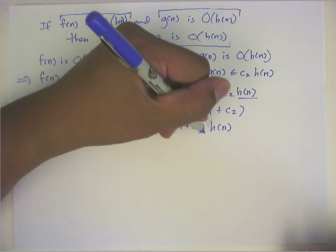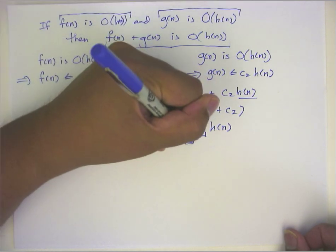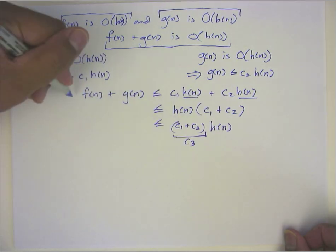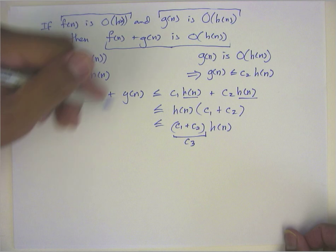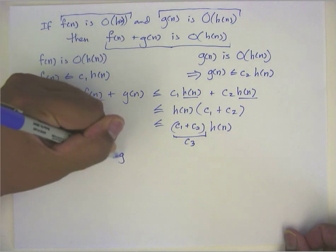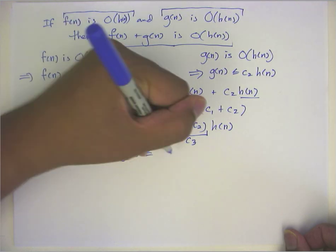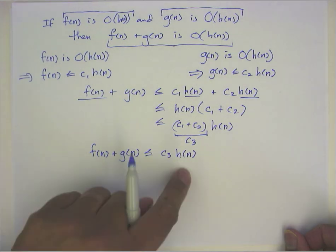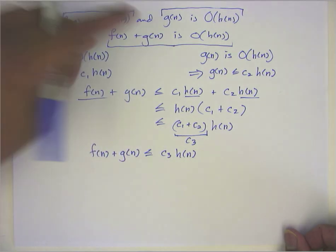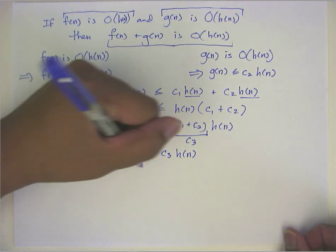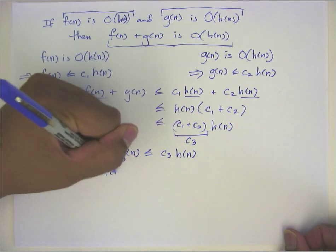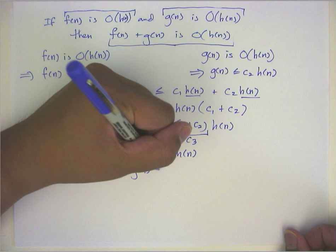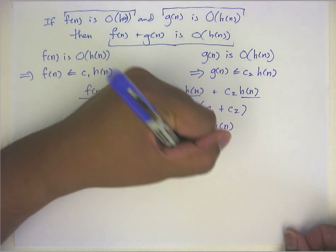So we're almost done, right? So here's a, this is a constant. I'm going to call this c3. And then rewrite the entire relation starting from here to get the following. So I get f(n) plus g(n) less than or equal to c3 times h(n). Well, looking at this, by the definition of big O, this means that f(n) plus g(n) is big O h(n).